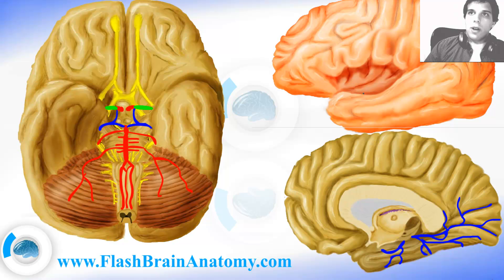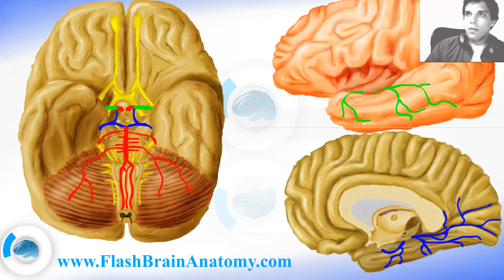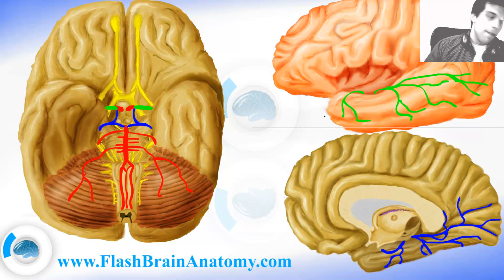The first branch is called the anterior temporal branch. Then we have the middle temporal branch, and we have the posterior temporal branch. We also have the parietal occipital branch. So those were the inferior ones.